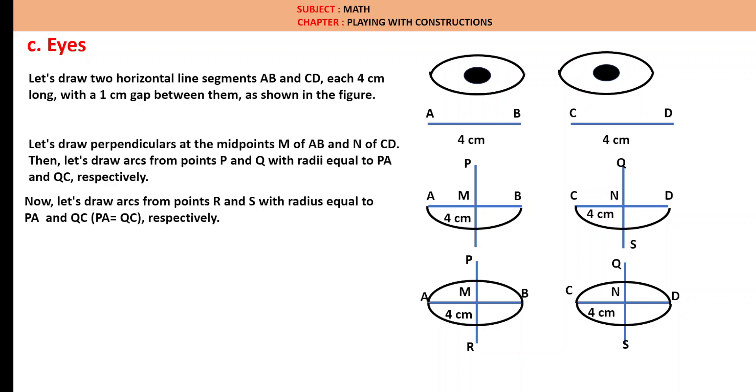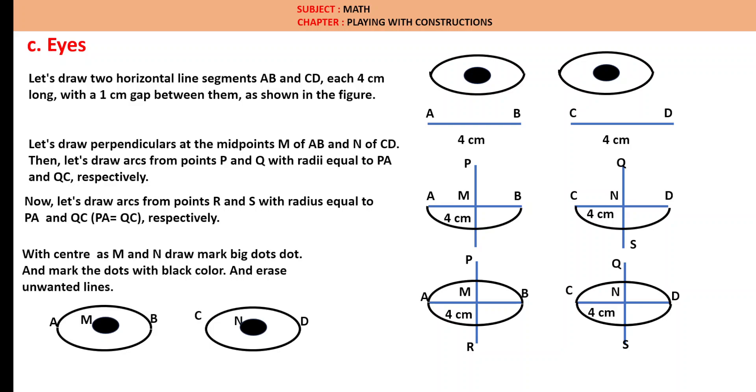Now our next step is to draw at the center of the circle a small circle or dotted place. With the center as M and N, mark big dots and mark the dots with black color and erase the unwanted lines. Therefore, these are the required eyes.